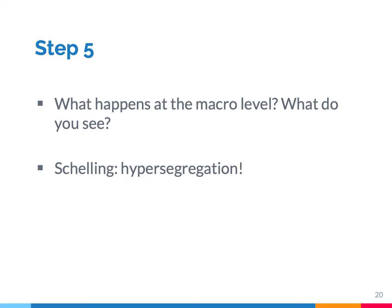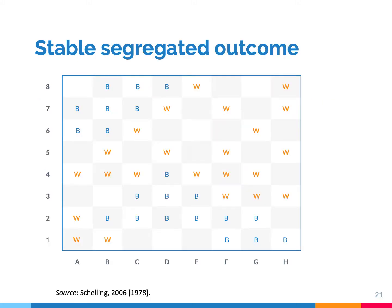A big question is: what happens? What is the result of this simulation experiment? In the Schelling model, the outcome is hypersegregation. Something like this happens — blacks are clustered together and white pieces are living somewhere else.